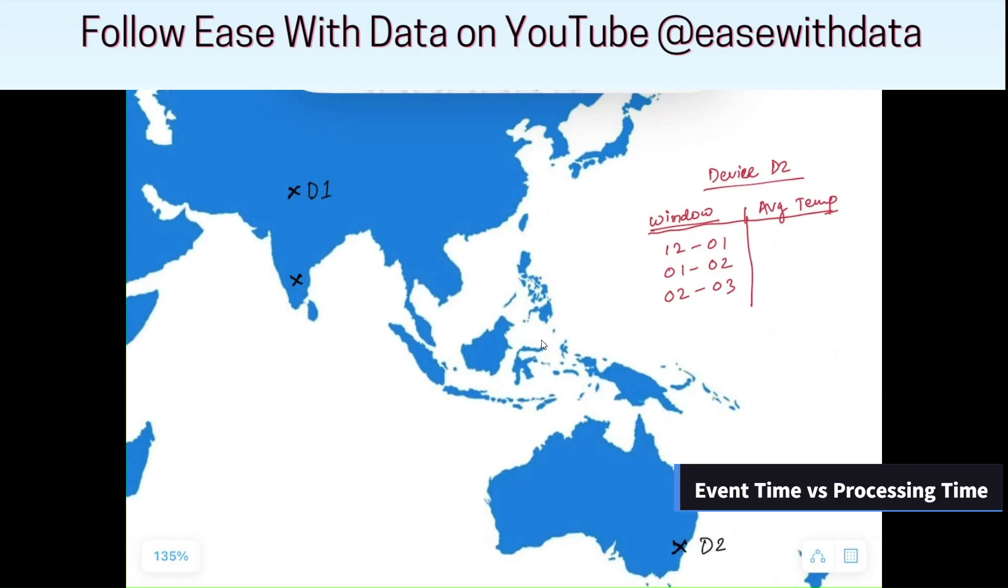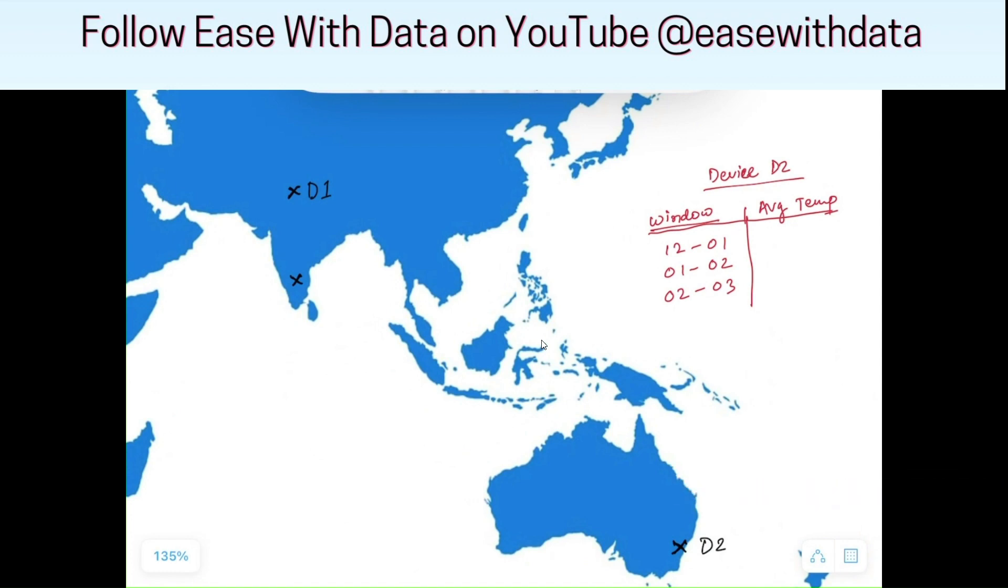In order to understand event time and processing time, let's consider a company that manufactures devices to record temperature and places them in different geographical regions throughout the world. Consider the company placed a device called D1 in New Delhi and a device called D2 in Sydney, Australia. The company records the temperature through the devices continuously using Spark Streaming and the whole processing happens hourly. It calculates the average temperature for each device hourly. You can see the windows on the screen: 12 to 1, 1 to 2, and 2 to 3.